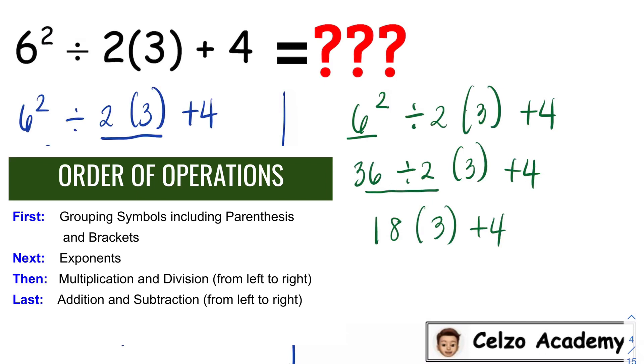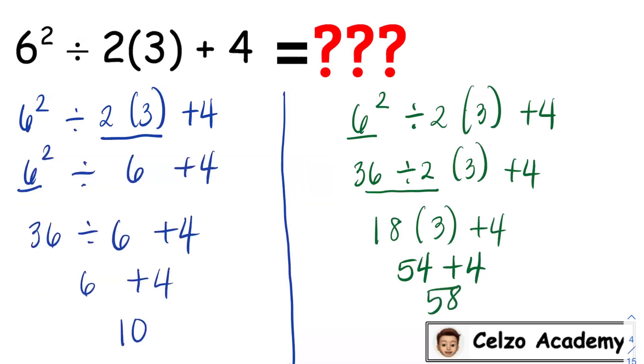The operations involved in this problem are times and addition. So we need to simplify first 18 times 3, which is 54. And 54 plus 4 is 58. So is the right answer 10 or 58?